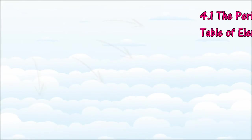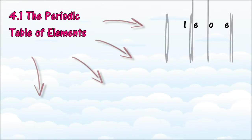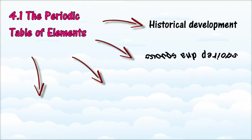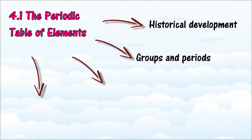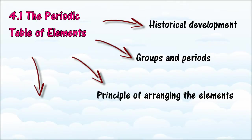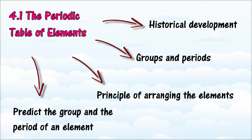In section 4.1, we will learn about the periodic table of elements. At the end of this section, you should be able to describe the contributions of scientists in the historical development of the periodic table, identify groups and periods, state the basic principle of arranging elements from their proton numbers, relate electron arrangement to group and period, explain the advantages of grouping elements, and predict the group and period of an element based on its electron arrangement.